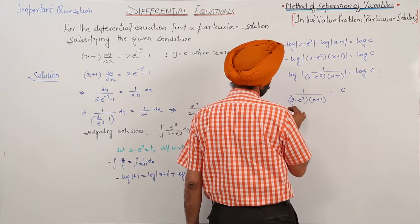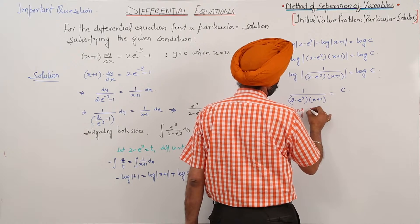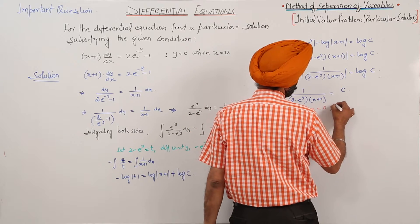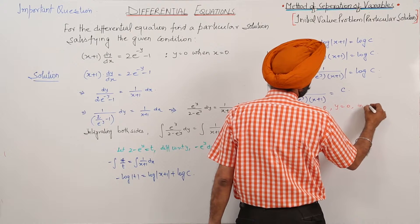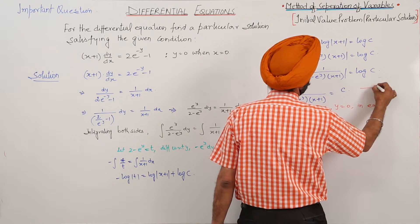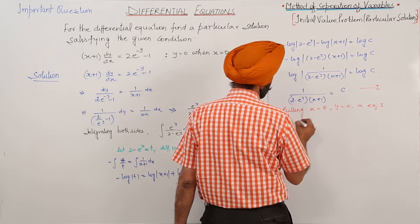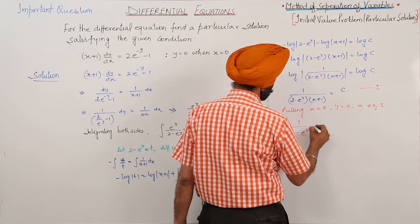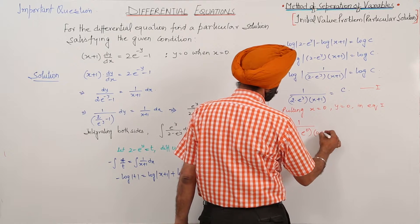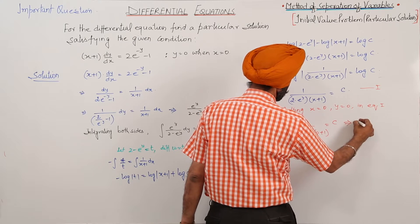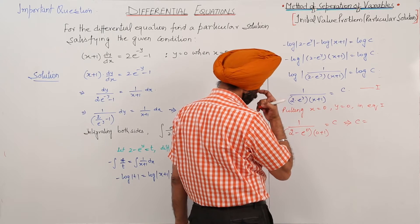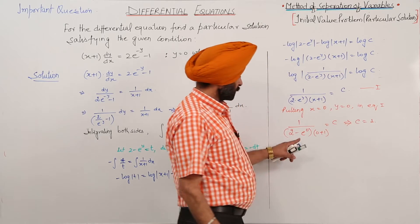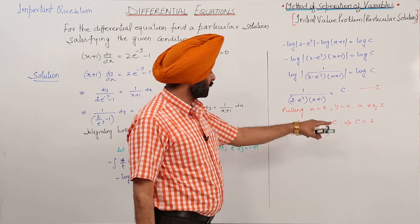Now, it is given that x = 0 and y = 0. Putting x = 0 and y = 0 in equation 1: 1 upon (2 minus e^0)(0 + 1) is equal to c. Since e^0 = 1, we get 2 minus 1 = 1, and 1 times 1 = 1. Therefore c is equal to 1.